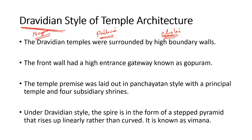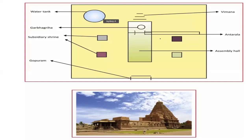Some of the features of Dravidian style of architecture were taken from Pallava style of architecture, but this style emerged and reached its zenith during the Cholas' time. The features of Dravidian style of temple architecture include high boundary walls, as we can see in this picture. This is the sanctum sanctorum or Garbhagriha.